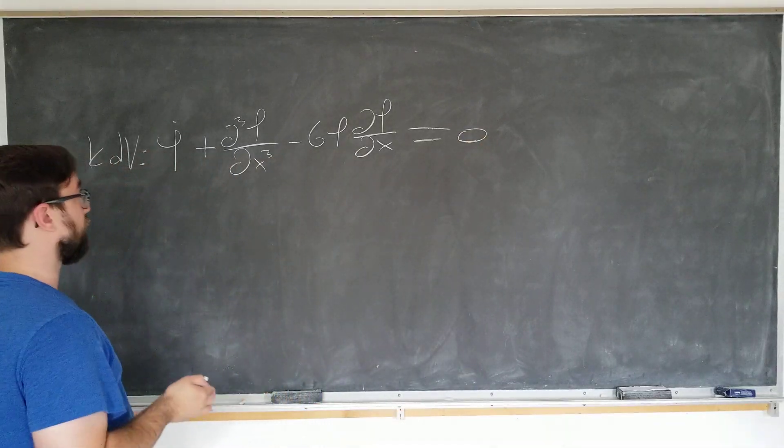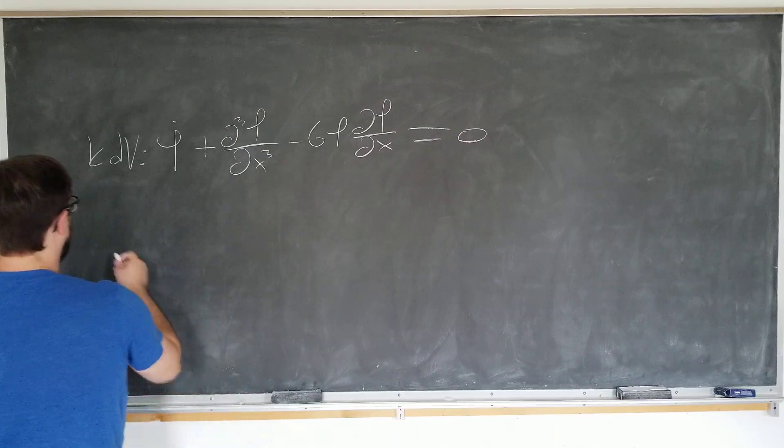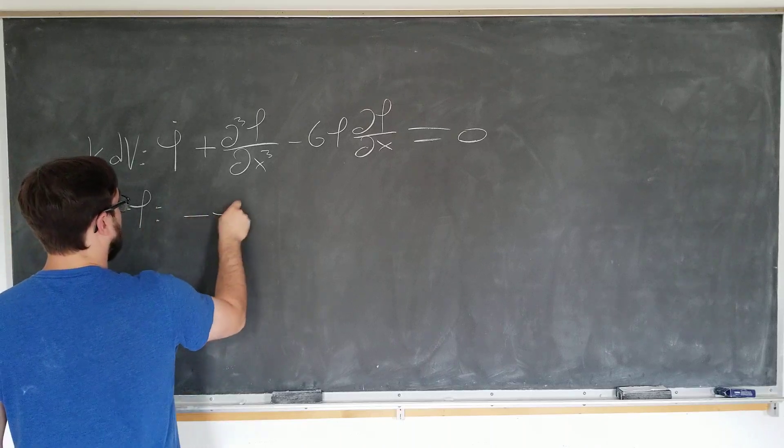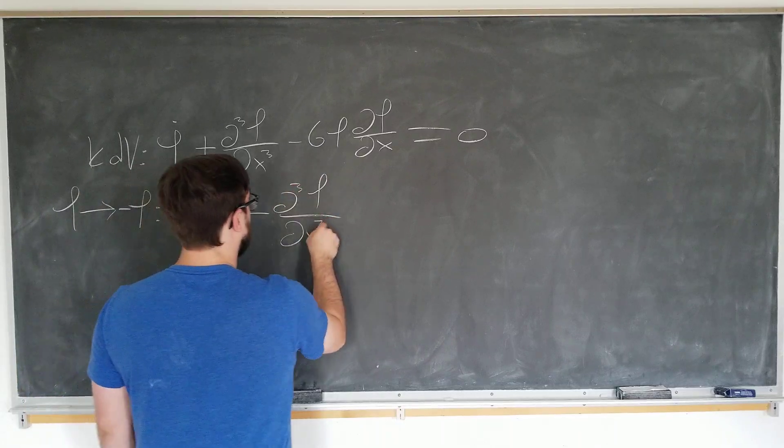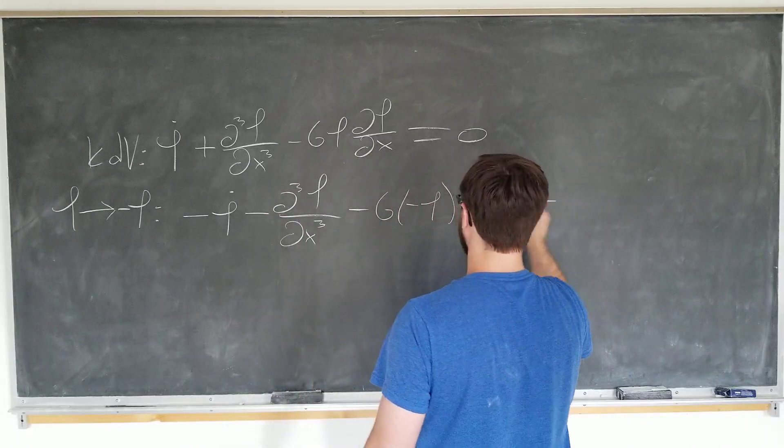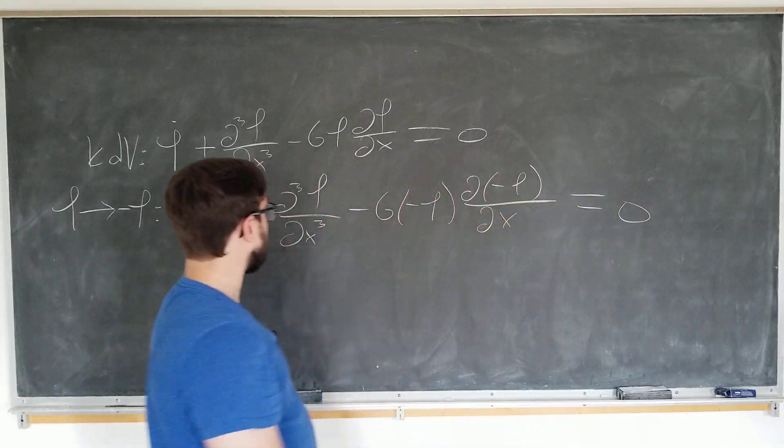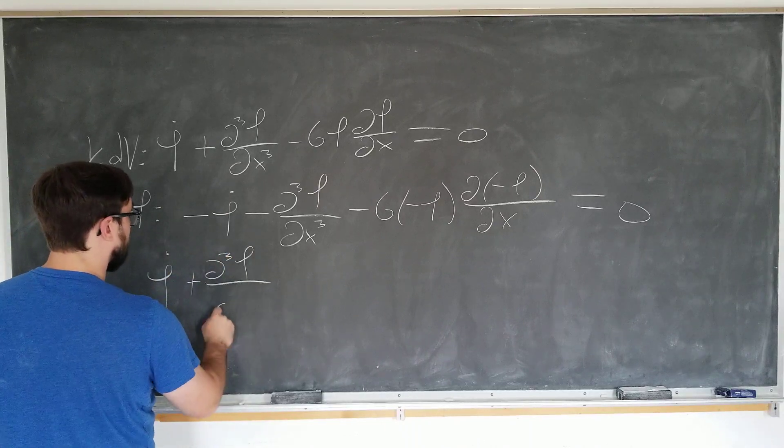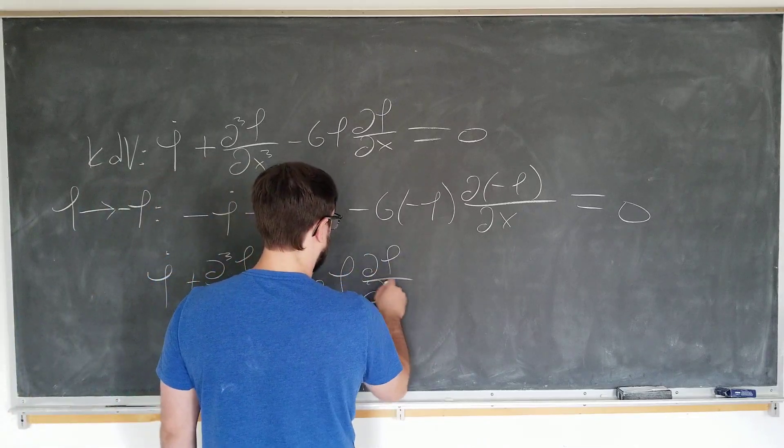There is an associated equation, which is also called the KDV equation, which has everything plus. So we just let psi go to minus psi. It tells us that minus psi dot minus d cubed psi by dx cubed minus 6, so we got minus psi here, we got minus psi here, so those become 1. And we have minus signs everywhere, which tells us that psi dot plus d cubed psi by dx cubed plus 6 psi d psi by dx is equal to 0.